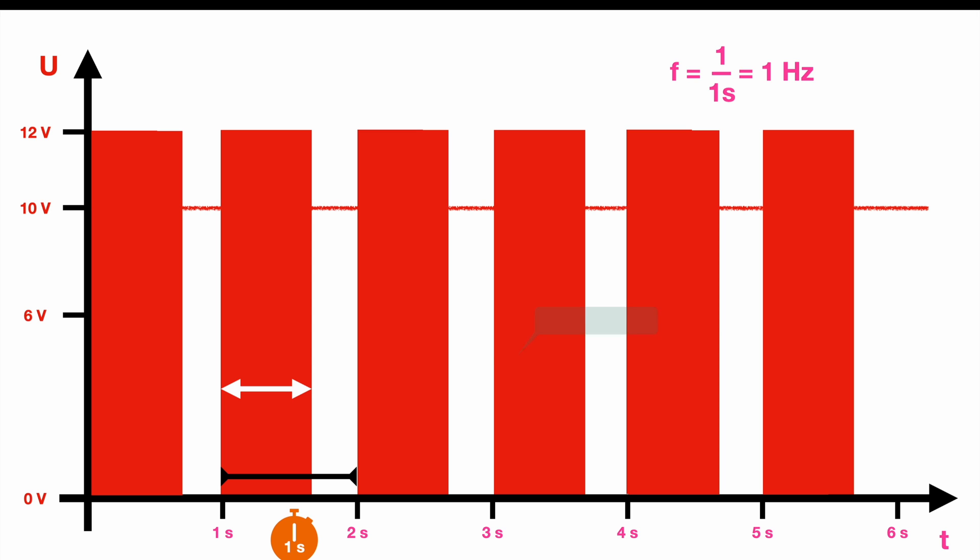But since we mentioned many times this ratio between the high time and the low time let's give it a name. It's called the duty cycle. So the duty cycle is defined as the high time divided by the period time.